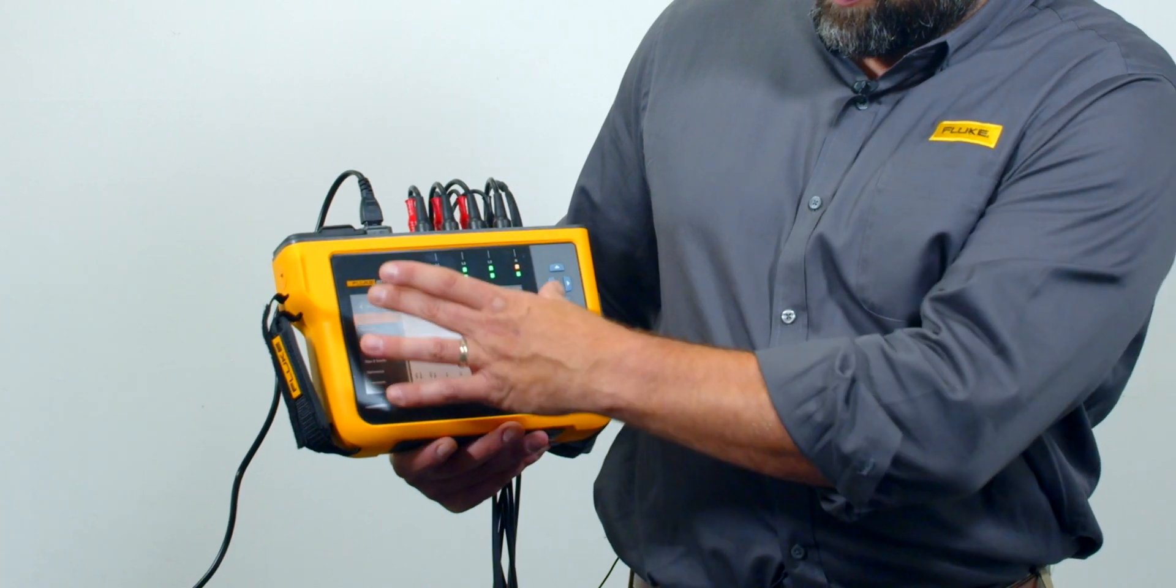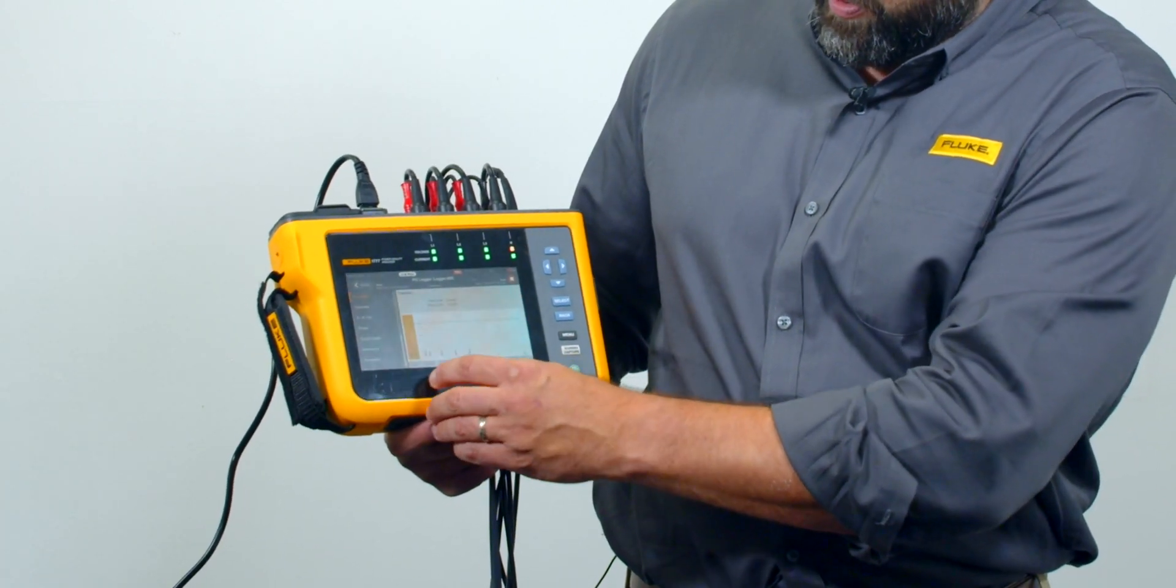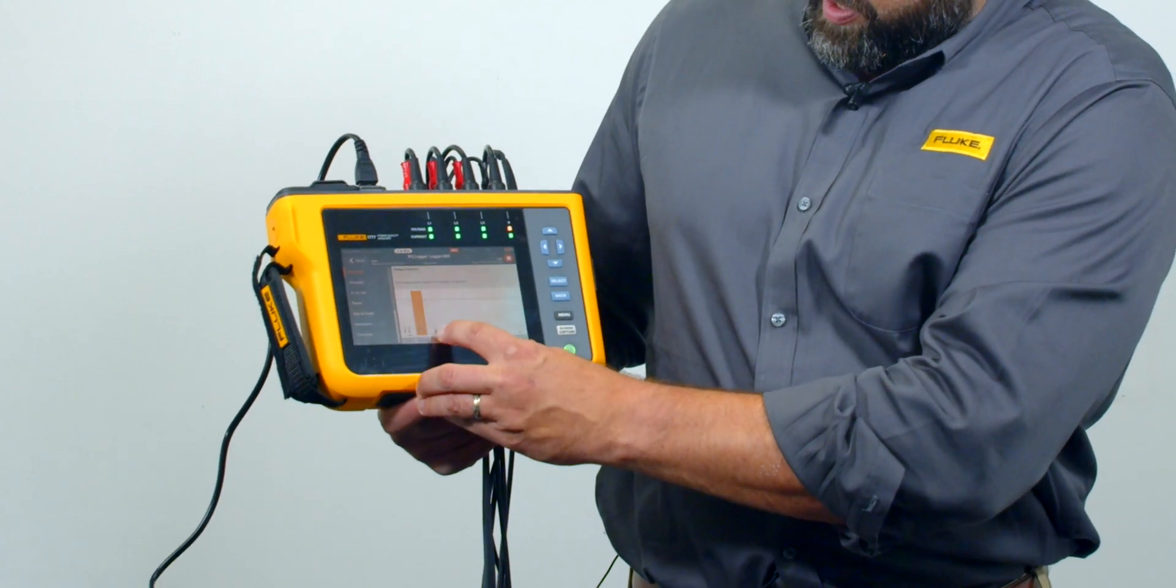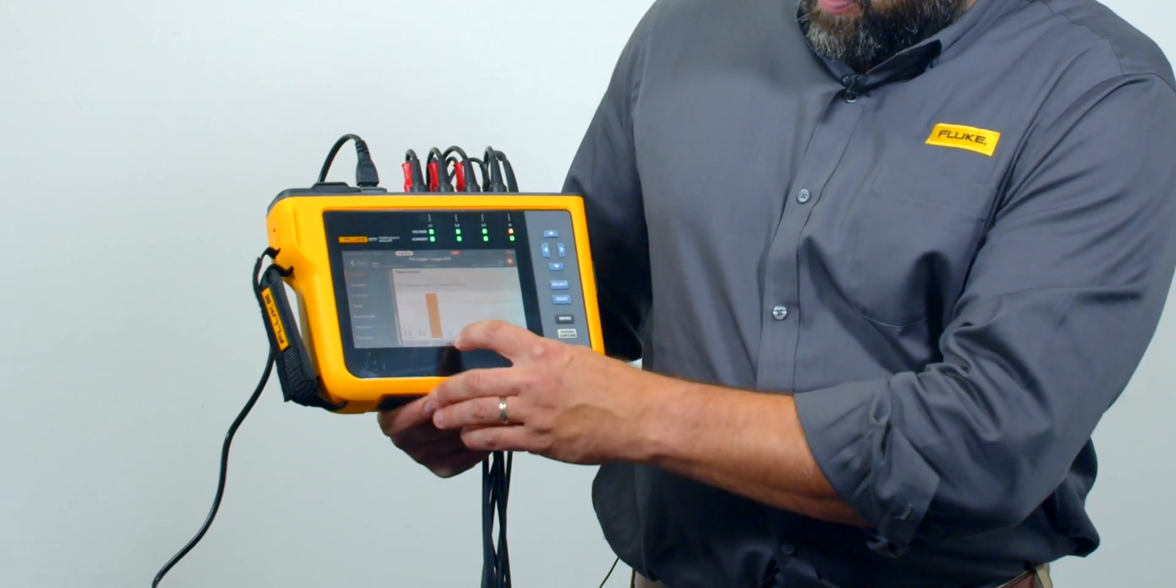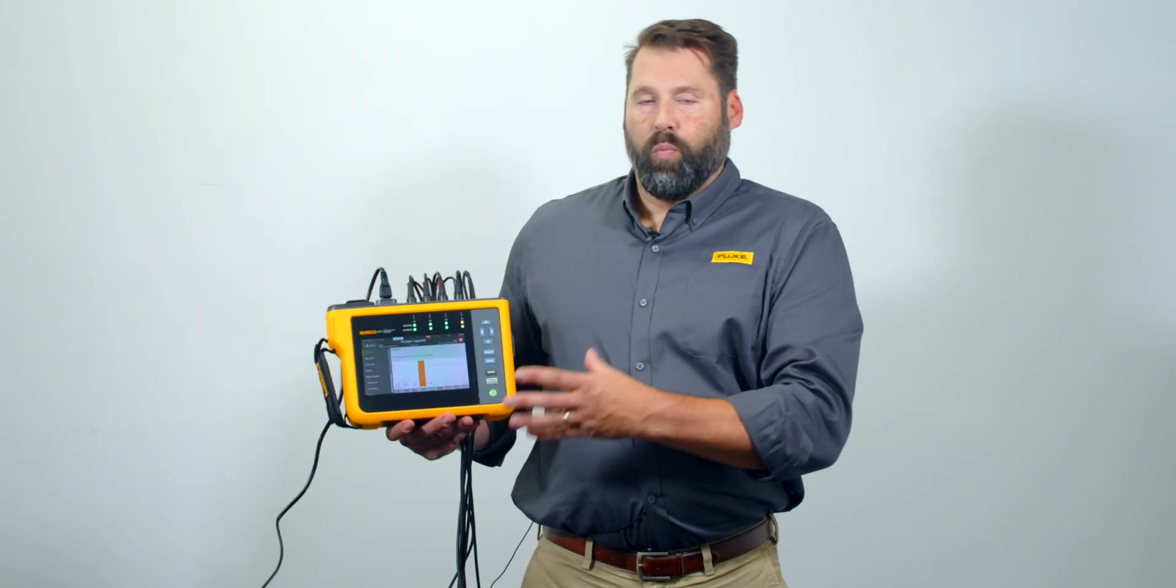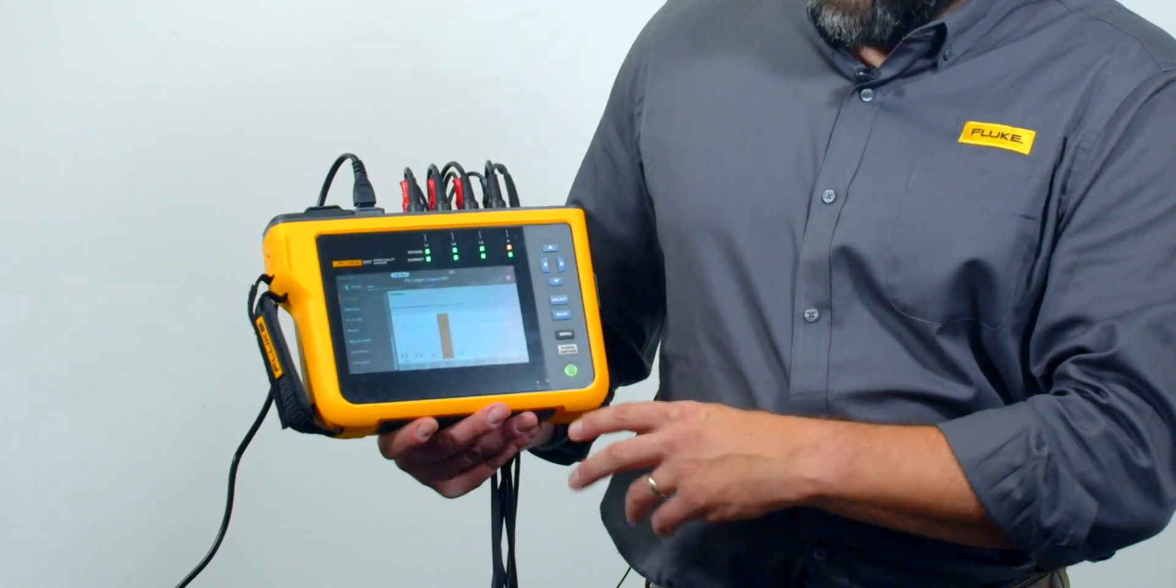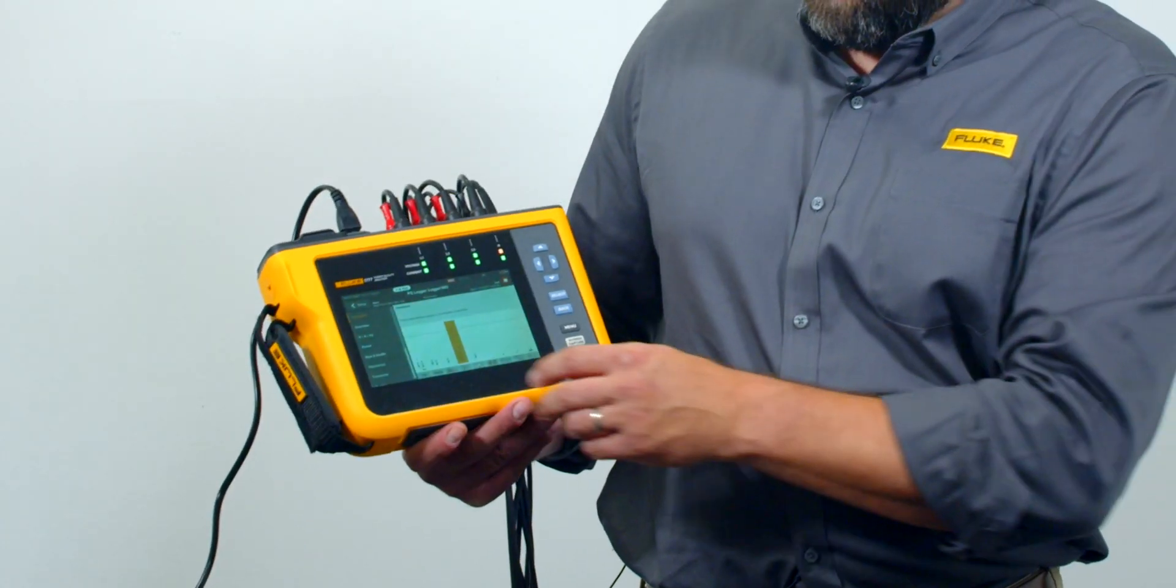This is a single screen where I can take a look at all of these different power quality measurements. I can look at frequency. I can look at voltage. I can look at harmonics. I can look at it as a phaser diagram. This is a really nice spot. It's a one shot, one screen. I can see everything that's going on and it will tell me if it's pass fail.